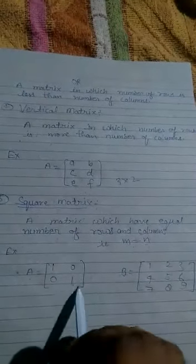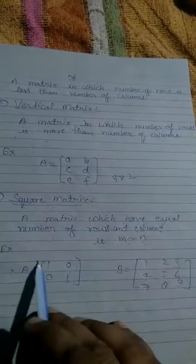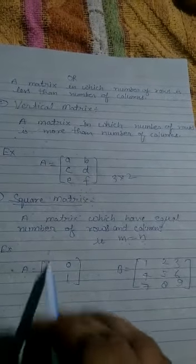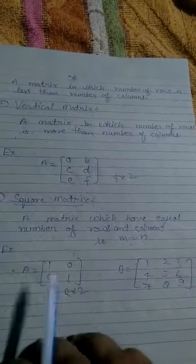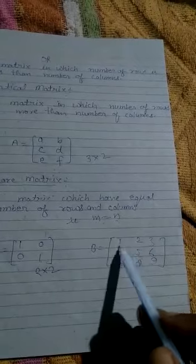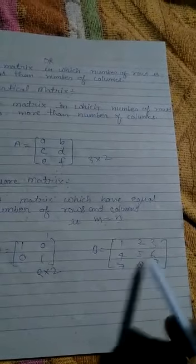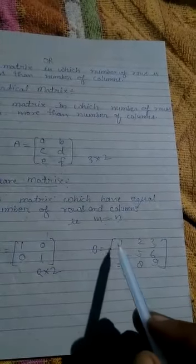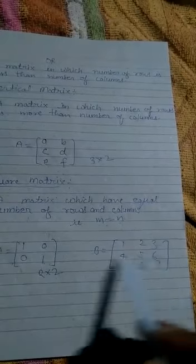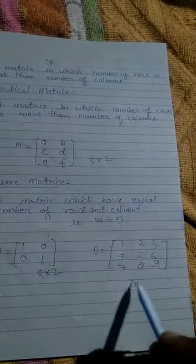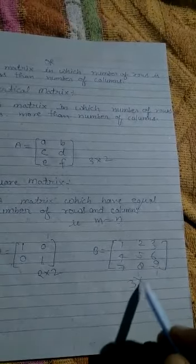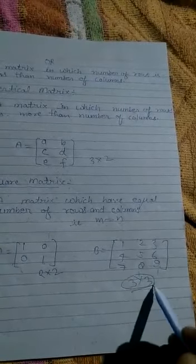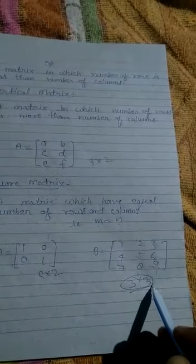For example, A = [1 0; 0 1]. Here, two rows and two columns, means 2×2. And B = [1 2 3; 4 5 6; 7 8 9]. Here, three rows and three columns, so it will be 3×3 matrix.